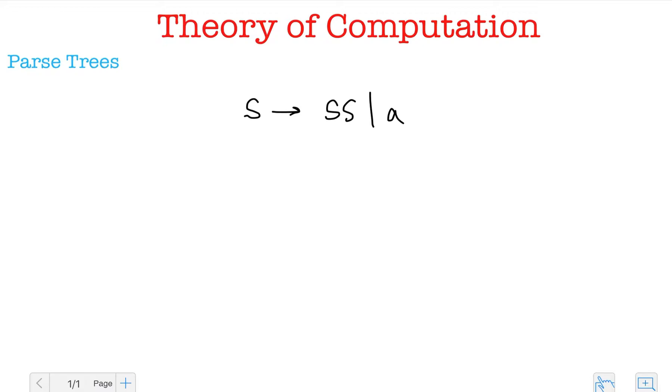There's something called the leftmost derivation and there's something called the rightmost derivation. What the leftmost derivation means is that at every step, so I need to be given a string, so let's say I have A, A, A, A. That's the string that I've been given.